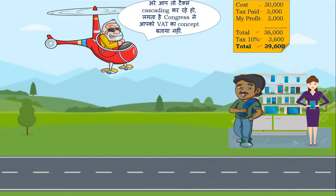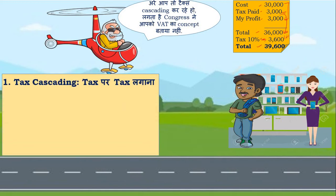Modi ji says the retailer is doing tax cascading and asks if Congress never taught him the VAT concept. The teacher explains: tax cascading means tax is being calculated on a price that already includes previously paid tax — tax on tax. In our example, the retailer included the 3,000 tax he paid in his cost, and then charged 10% tax again on top of that. Tax on tax makes goods expensive and the consumer has to pay more.